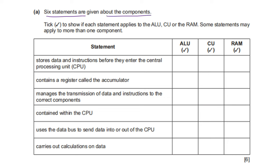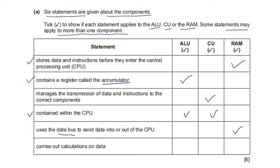Six statements are given about CPU components — tick to show if each applies to the ALU, CU, or RAM; some may apply to more than one. Stores data and instructions before they enter the CPU — RAM. Contains a register called Accumulator — ALU. Manages the transmission of data and instructions to the correct component — CU (control unit). ALU and CU are contained within the CPU; RAM is an external component. Uses the data bus to send data into or out of the CPU — RAM and ALU. Carries out calculations on data — ALU (arithmetic and logic unit).